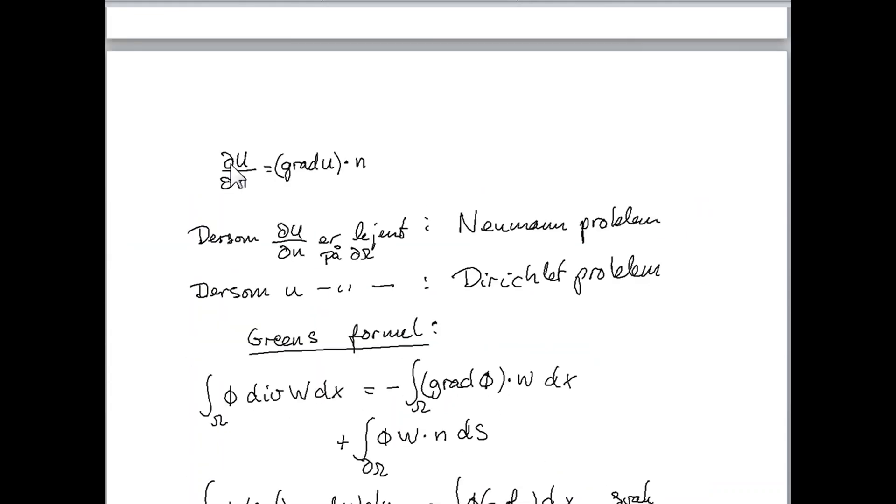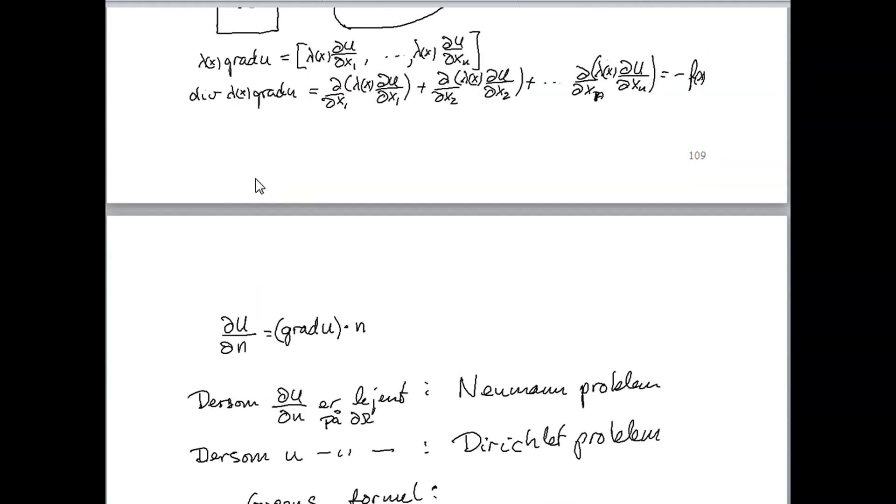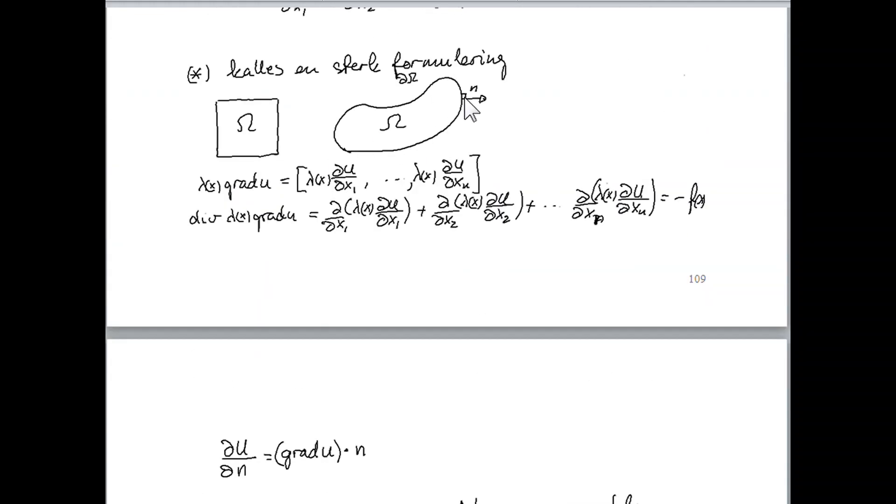Note that the normal derivative of u, let us illustrate it. This is a normal vector, unit normal vector, it has length equal to 1, and it points in the normal direction of the boundary at every point here.